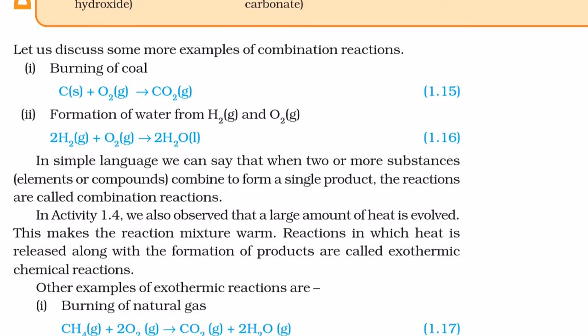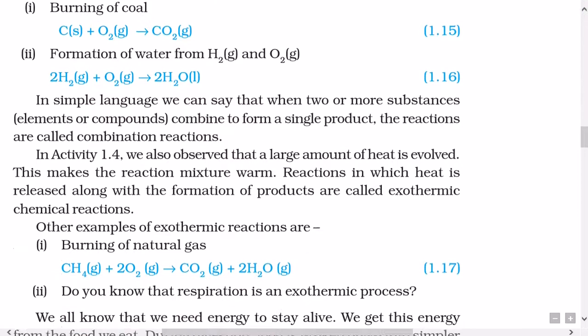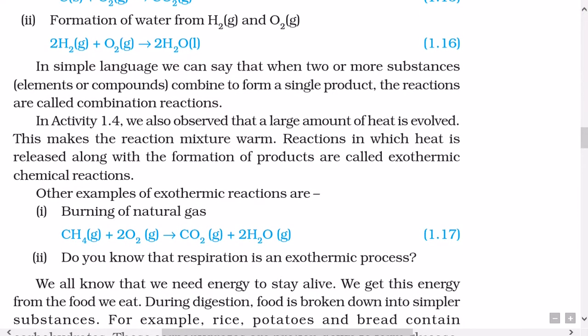Let us discuss some more examples of combination reactions. Number 1: Burning of coal — C (solid) plus O2 (gaseous) gives CO2 (gaseous). Number 2: Formation of water from H2 and O2 — 2H2 (gaseous) plus O2 (gaseous) gives rise to 2H2O (liquid). In simple language, when two or more substances, elements or compounds combine to form a single product, the reactions are called combination reactions.